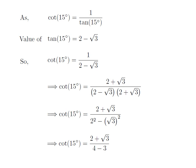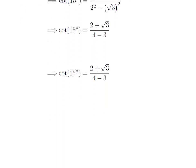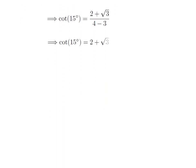So cotangent of 15 degrees is equal to 2 plus square root of 3 upon 4 minus 3. As 4 minus 3 is equal to 1, cotangent of 15 degrees is equal to 2 plus square root of 3.